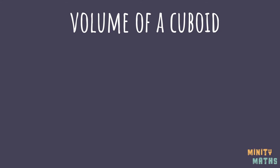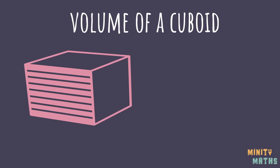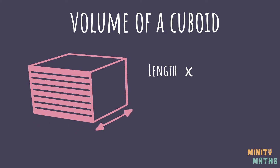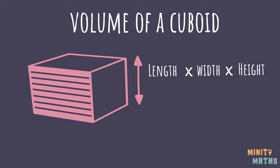Volume is another word for capacity, or the space inside a 3D object. To find the volume of any cuboid, all we have to do is multiply the length, width and height together, which makes this formula.